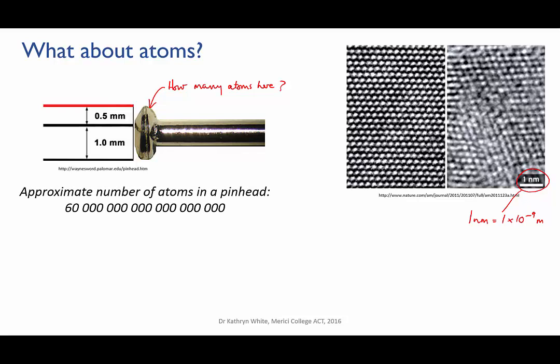Well, it's about 6 times 10 to the 19—that's 60 quintillion atoms in a pinhead. So clearly we need a really big number if we're going to skip count atoms because atoms are so small.